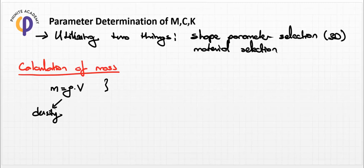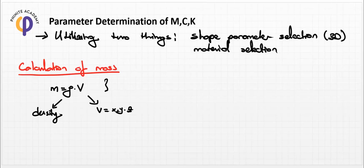How can we determine the volume value? Volume is directly related to the shape parameter design, because in real life everything exists in 3D dimensions: X, Y, Z. If we establish any machine or part in mechatronic designs, we need to give specific dimensions to these parts. We can create a volume variable as X times Y times Z, and by increasing or decreasing X, Y, Z, the mass parameter changes accordingly.